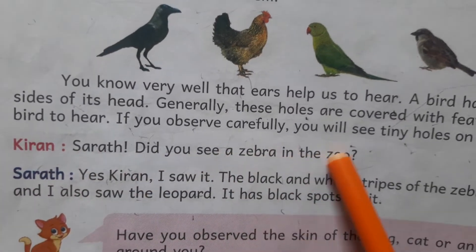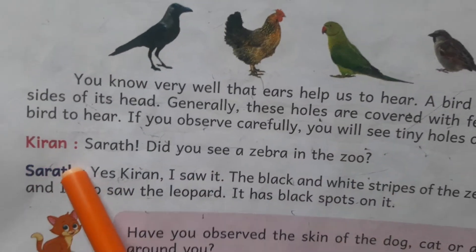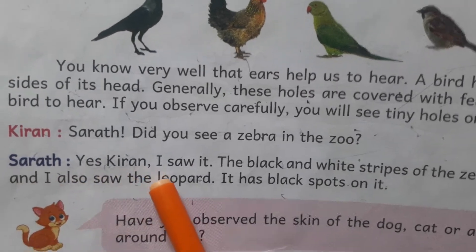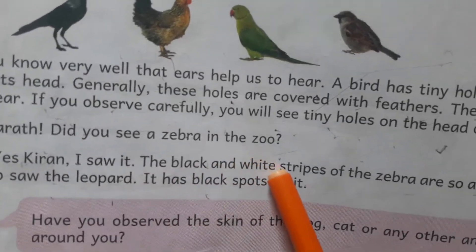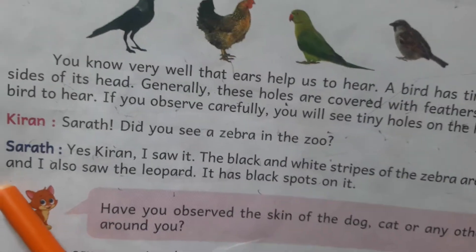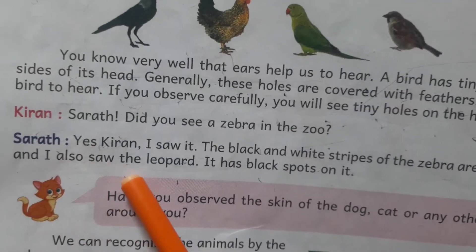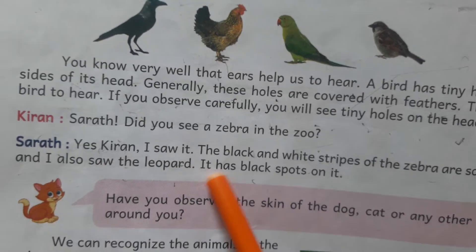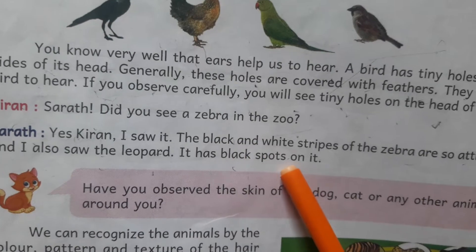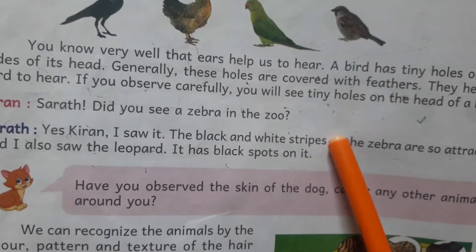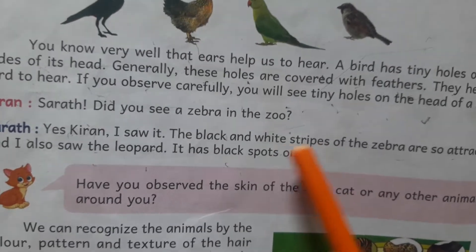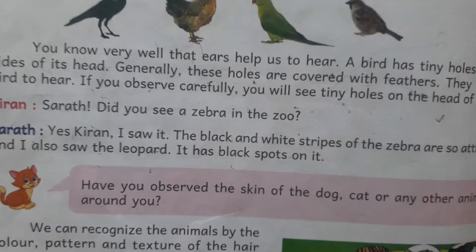Did you see a zebra in the zoo? Kiran asks Sharat. Yes Kiran, I saw it. The black and white stripes of the zebra are so attractive. And I also saw the leopard — it has black spots on it. The zebra has stripes, which are like lines called charal.